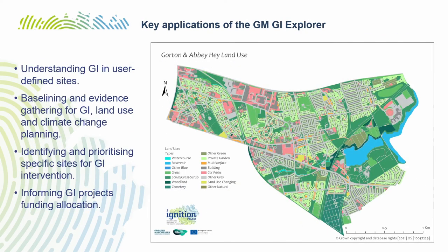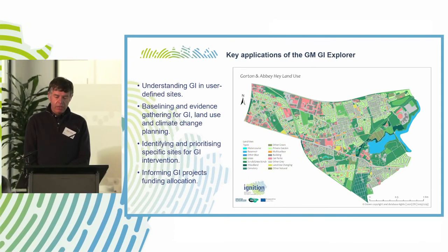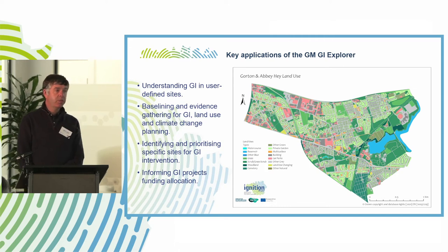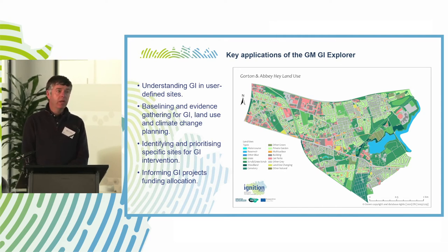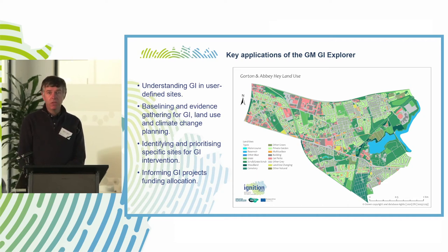Our key aim is for the GI Explorer to be used in practice, so we've been working on use cases to inform how it could be used. Examples include understanding GI in user-defined spaces such as a selected park. The GI Explorer also has a role in gathering baseline data evidence for GI-related planning and strategy development. A key application is the ability to identify and help prioritize locations for GI investment and intervention. Tangible examples include informing where developer contributions could be allocated to support pipelines of public realm infrastructure improvement projects. The GI Explorer also includes specific data to support potential greening of car parks and local nature recovery strategy development and implementation.